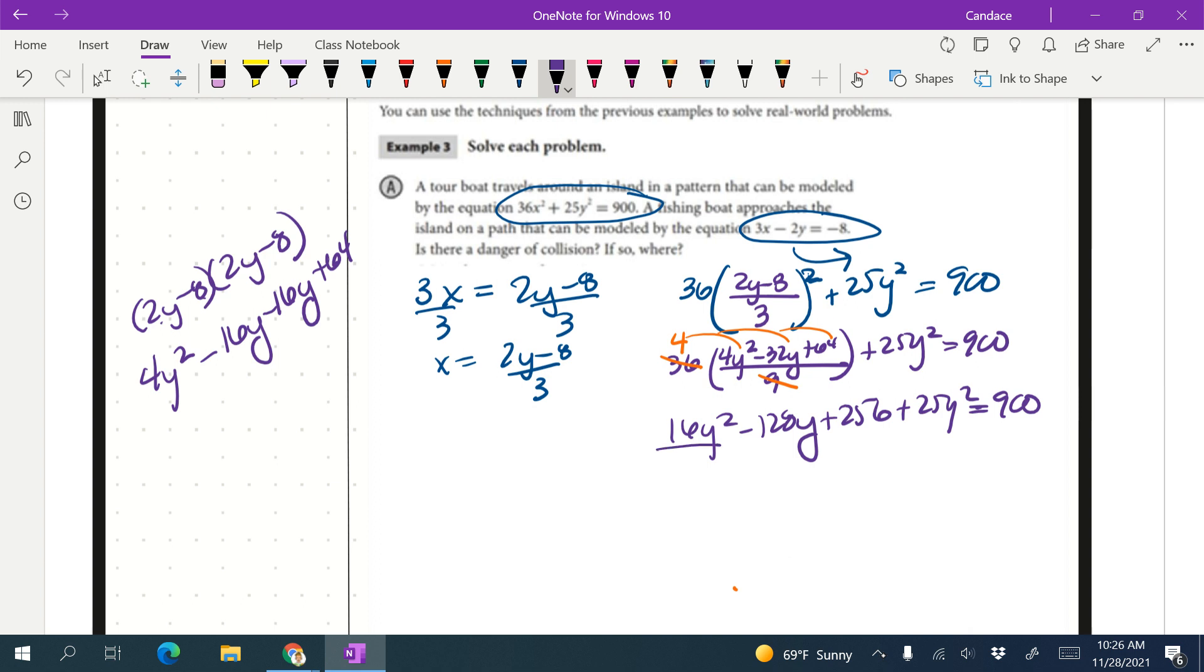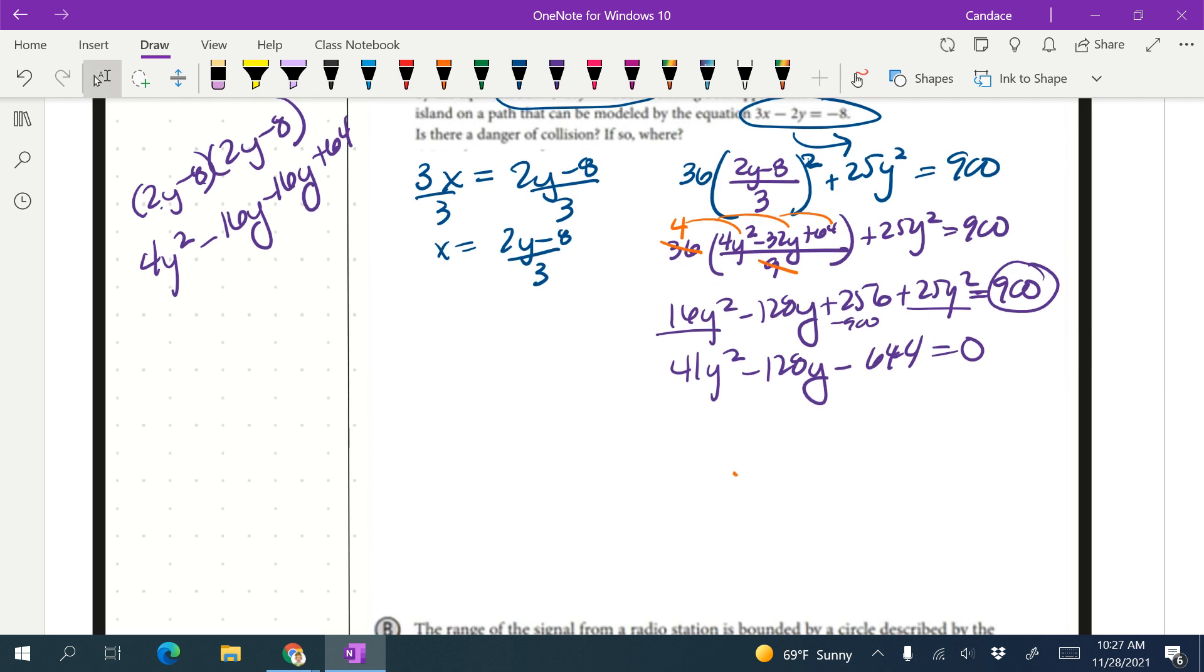So I'm going to put together 16y squared and 25y squared, and that's going to give me 41y squared. Negative 128y doesn't have any friends or like terms. I'm going to subtract the 900 over, so I'd end up with negative 644 equals zero. I definitely would not expect you to try to do a magic X. I would put this directly into the quadratic formula.